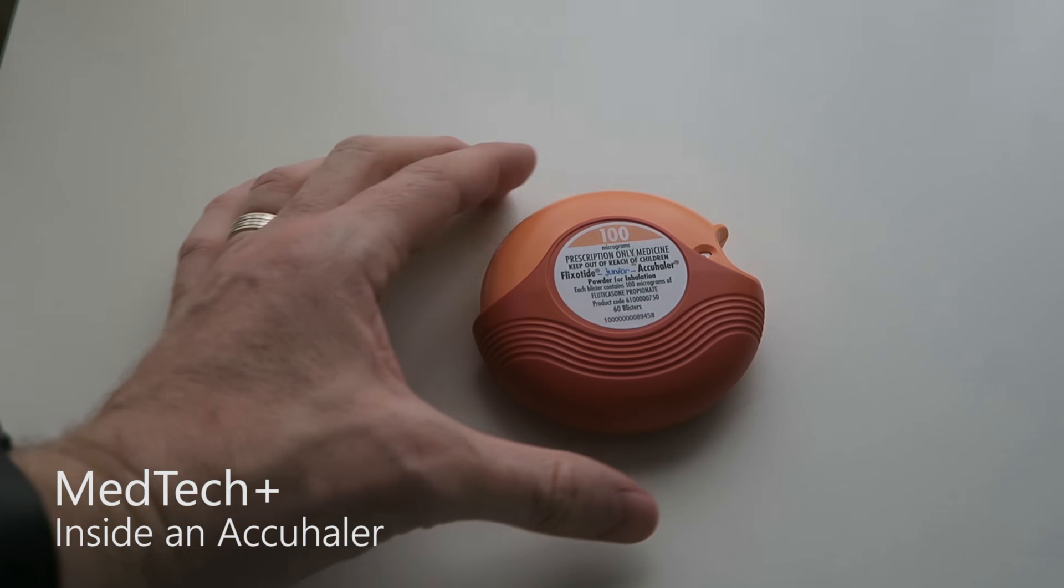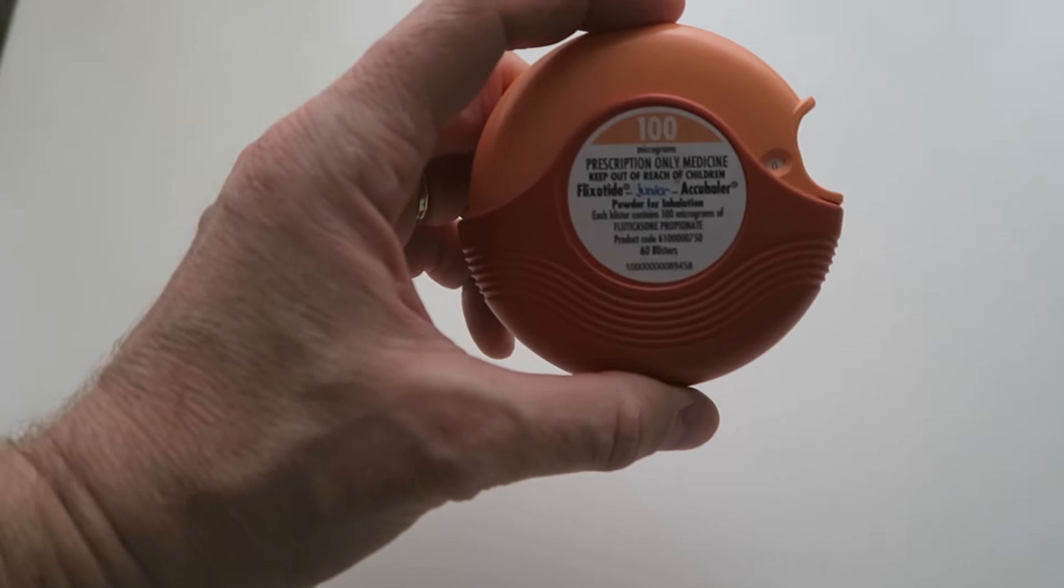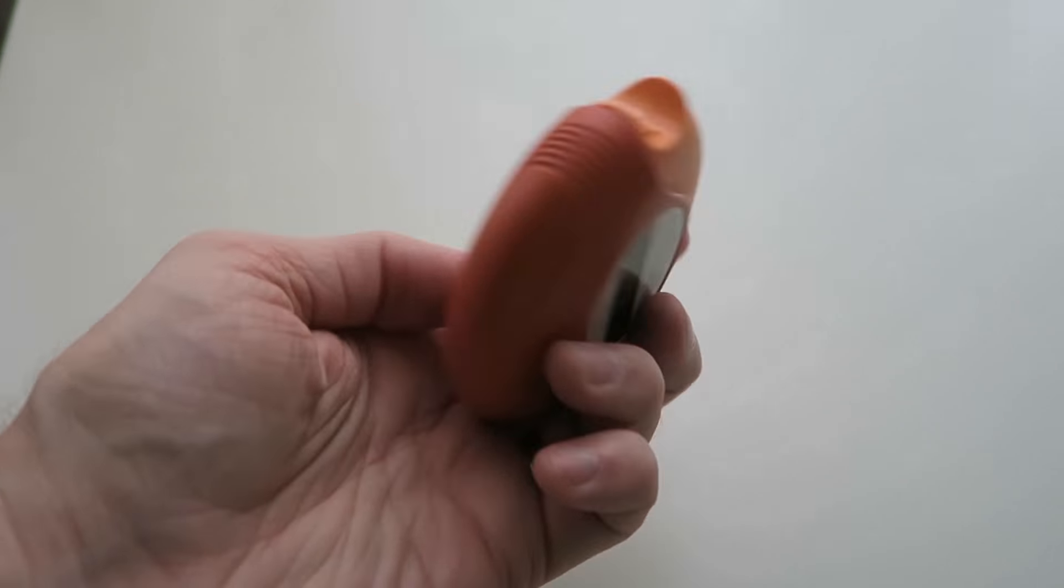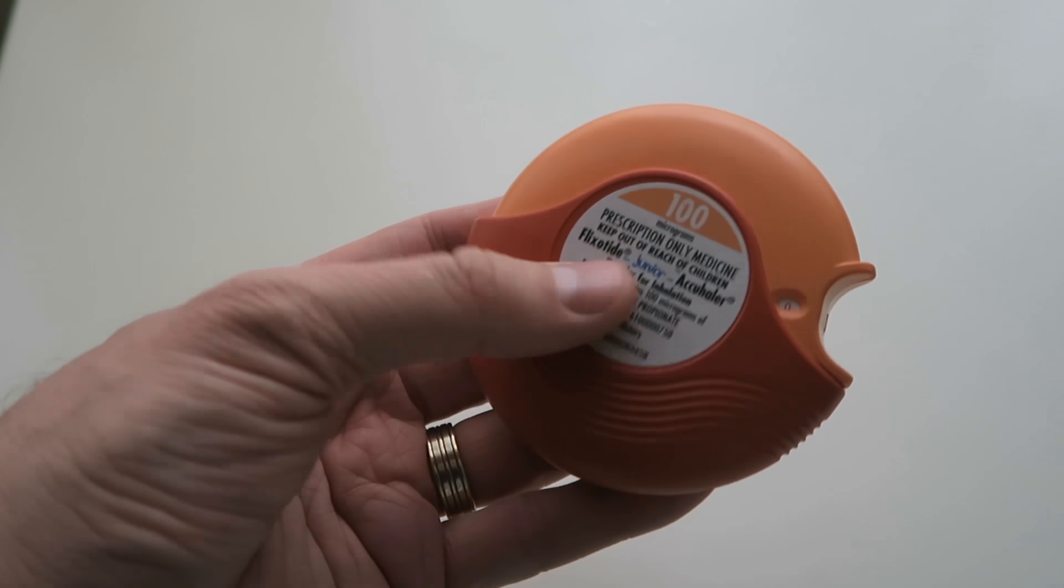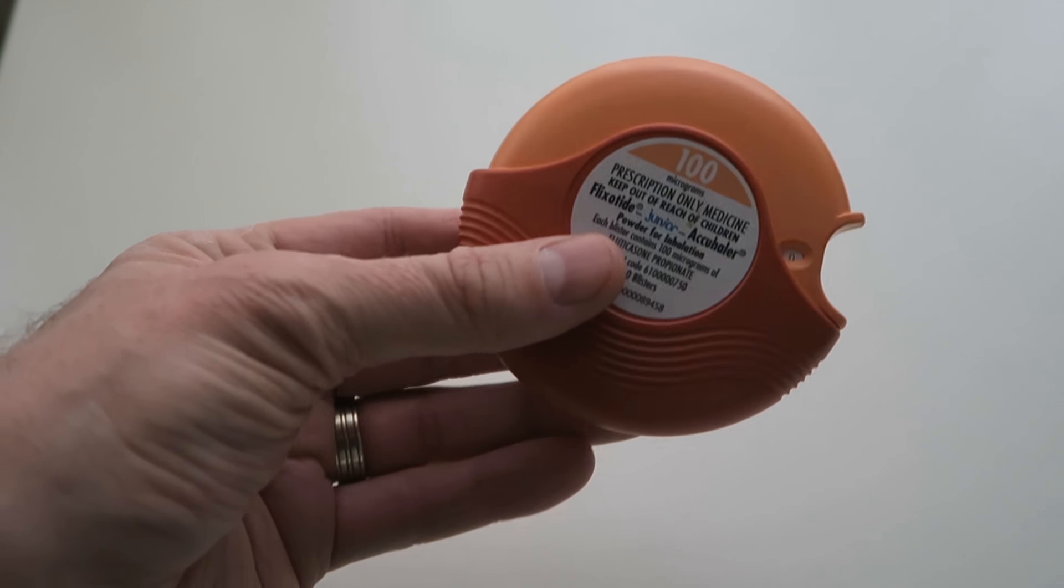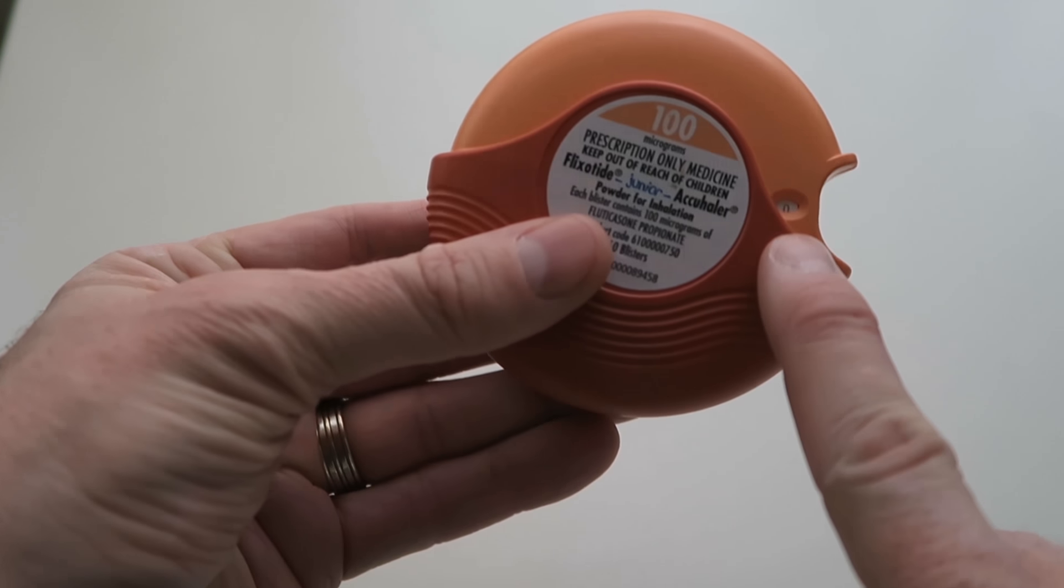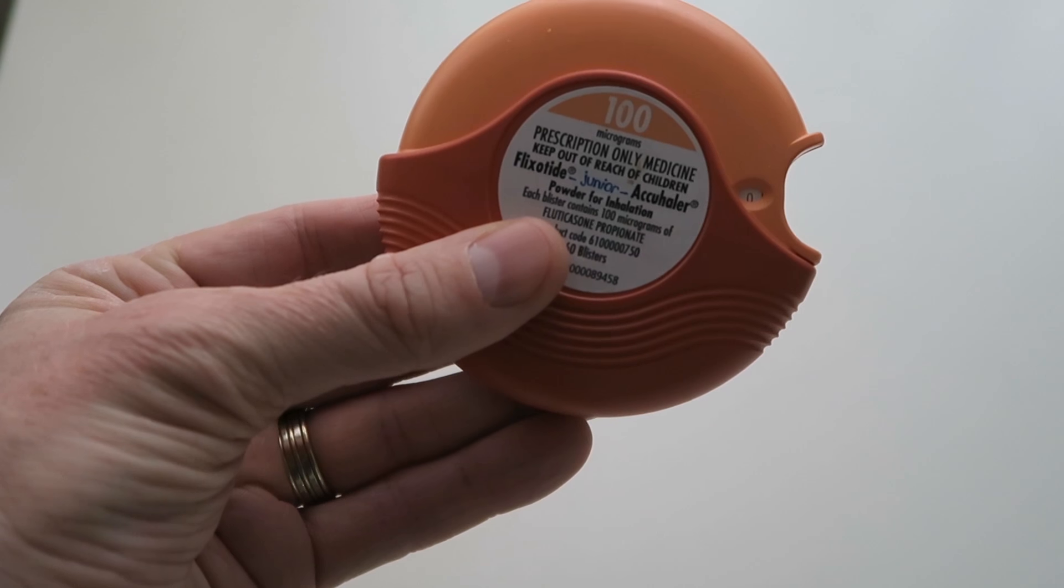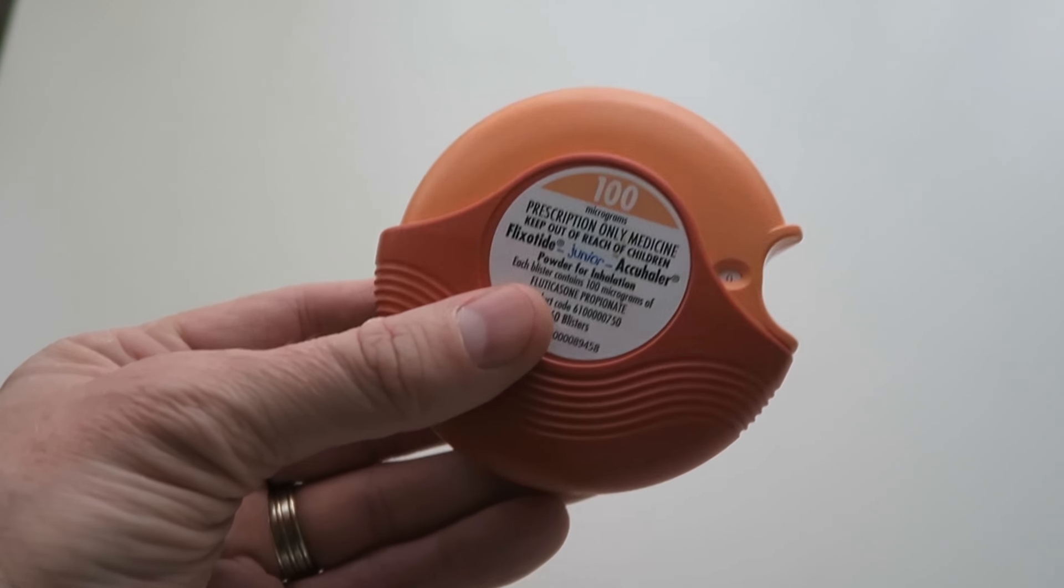In this video we're going to be looking at the inside of the AccuHaler. Now this one is a junior, but we're not looking at so much the medicine but the actual delivery device itself, this little disc. As you can see here, the little number zero in the window indicates that the medication is fully used up.